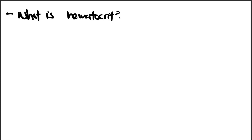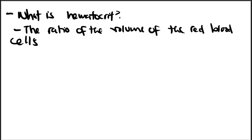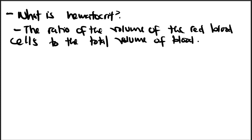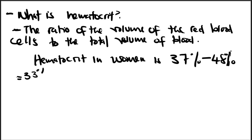Hematocrit is simply the ratio of the volume of red blood cells to the total volume of blood. Since we are dealing with a woman, the normal hematocrit range in women is 37 percent to 48 percent. This woman has a low hematocrit because her hematocrit is given as 33 percent, which means she has anemia.